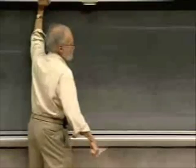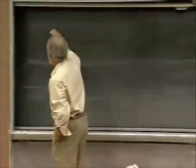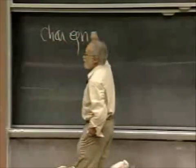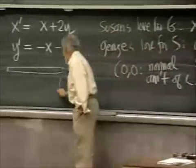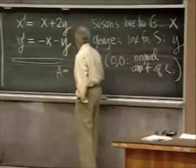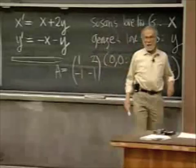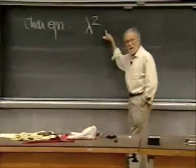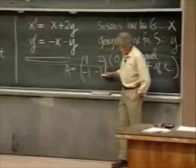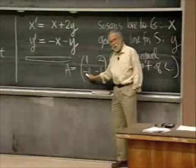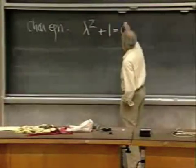Well, let's solve it. The characteristic equation is lambda squared. The matrix that governs this system is A equals 1, 2, negative 1, negative 1. The trace of that matrix — the sum of the diagonal elements — is zero, so there's the zero lambda term. The determinant, which is the constant term, is negative one minus negative two, which is plus one. So the characteristic equation, by calculating the trace and determinant, is lambda squared plus one equals zero.